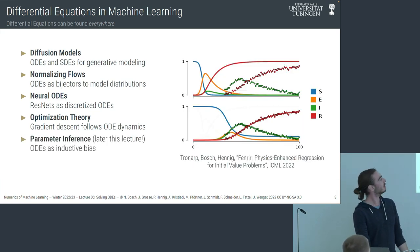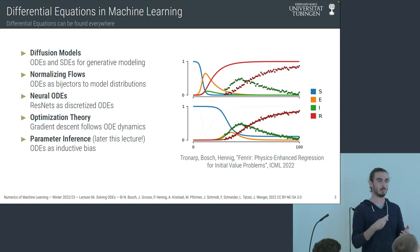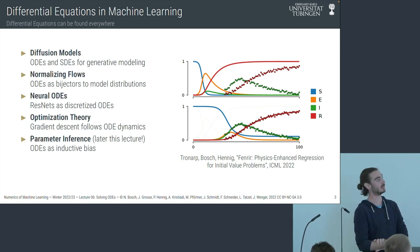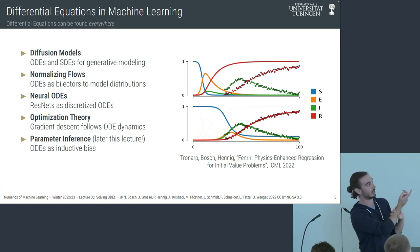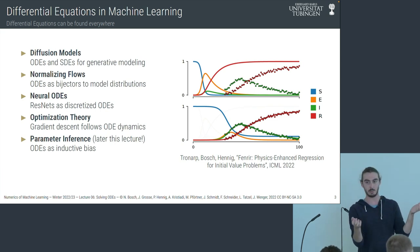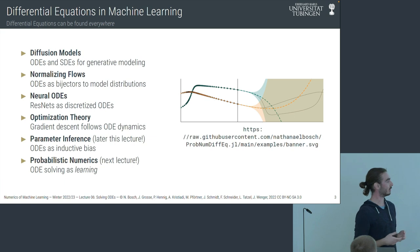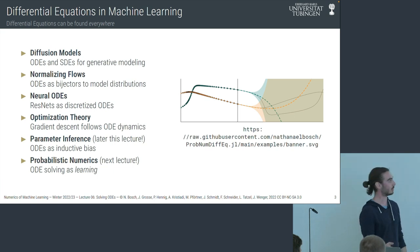The one example we will do in this lecture is parameter inference, which relates more to the machine learning settings we're used to. We have some data and we want to learn from it. If we know about the process that generates the data, maybe we can learn something more meaningful. As a small spoiler for next lecture: the act of solving an ODE is itself a process of learning something — learning an unknown function. Next lecture we will interpret numerical ODE solvers as machine learning algorithms.